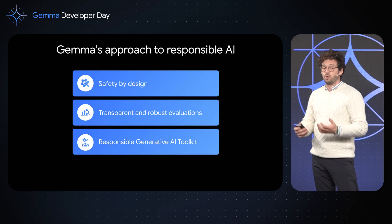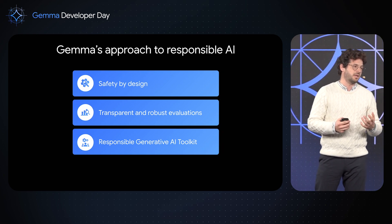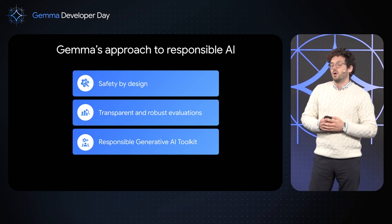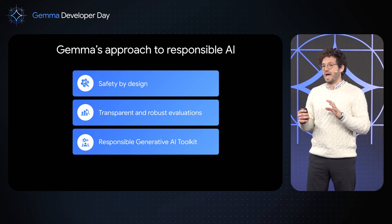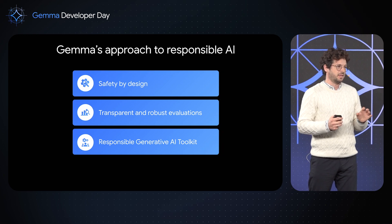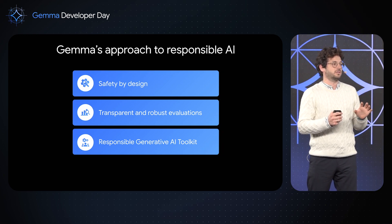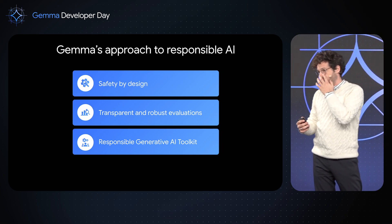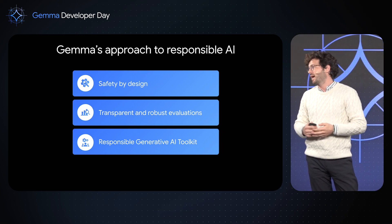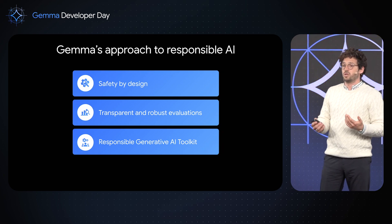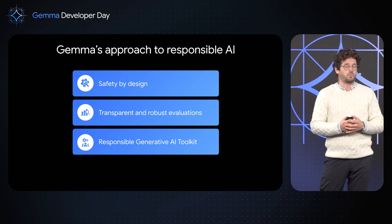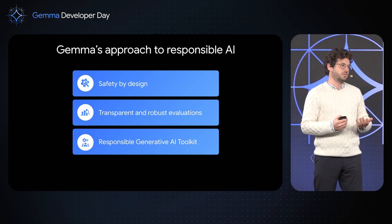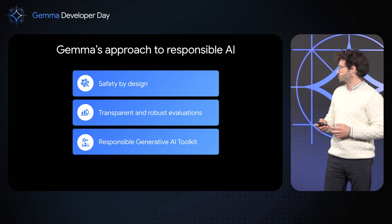Concretely, our approach on responsible AI for Gemma lies on three pillars. First, what we've done: we've made our best effort for Gemma to be as safe as possible by design. Then we have evaluated the models transparently and robustly, and we're sharing those evaluations with you in our transparency report. And then what we're doing for the developer community to help deploy Gemma responsibly — that's mostly the Responsible Generative AI Toolkit.